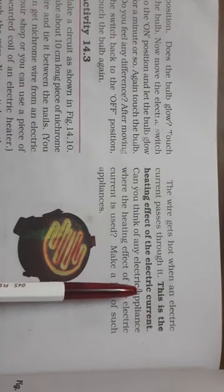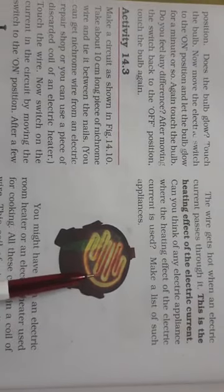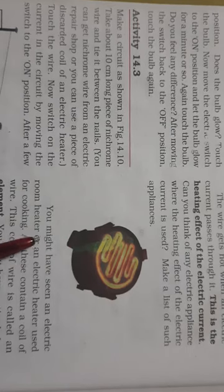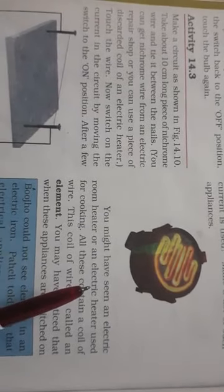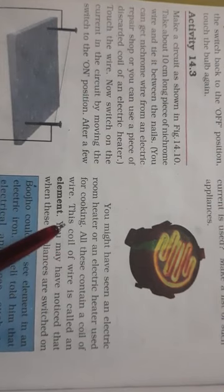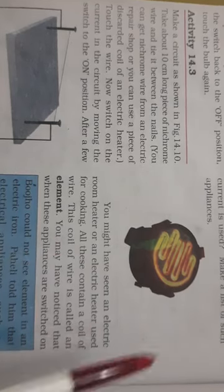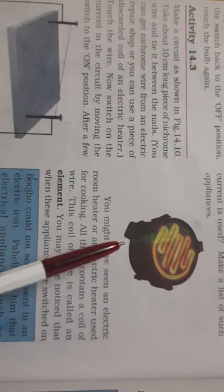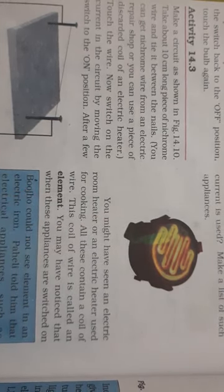And this heating effect of electric current is used nowadays in many things. At home we all use heaters. These are the electric heaters. Then you have got the electric room heater. Nowadays children it is very cold and what do we use at home? We use the electric heater or electric room heater or the blowers. And what do these contain? All these contain this coil. This coil is called an element. So what is an element? The coil of wire. This coil of wire is called the element.